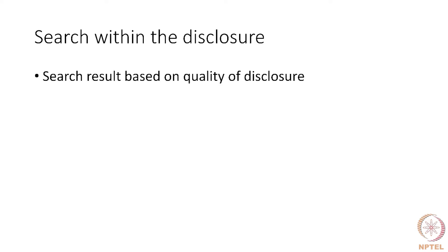Searching with the disclosure. Once you have a working disclosure, you do a search to understand whether the invention can be patented. The search result, as we have already mentioned, will be dependent on the quality of the disclosure. How rigorous the disclosure process will be will actually determine the quality of your search report.